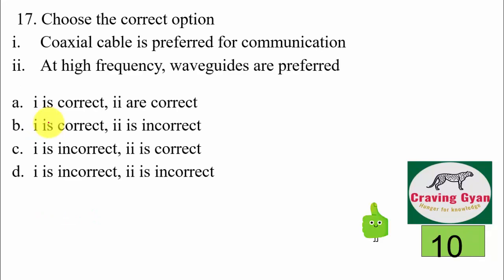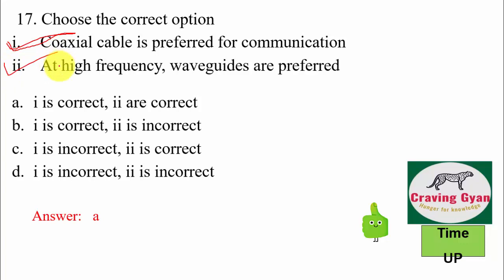Question 17: choose the correct option — coaxial cable is preferred for communication, and at high frequency waveguides are preferred. We know that coaxial cable is preferred for communication — true. At high frequency waveguides are preferred — true. Hence both statements are correct and the suitable option is option number A.